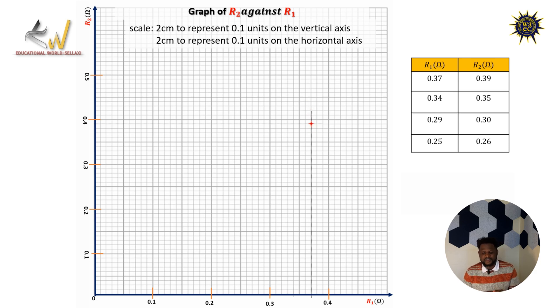Now, when R2 is 0.35, R1 is 0.34. Then we plot the points as well. Then we go ahead when R2 is 0.30, R1 is 0.29. So we plot the points as well. Now we go ahead when R2 is 0.26, R1 is 0.25.